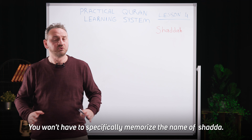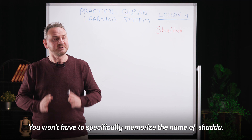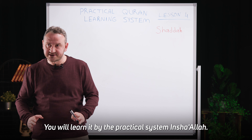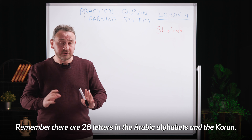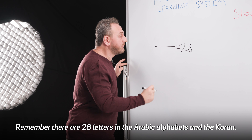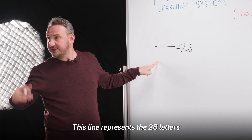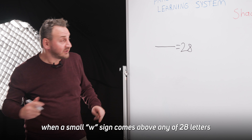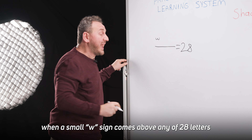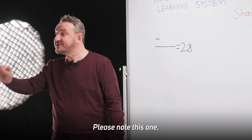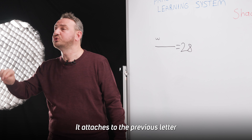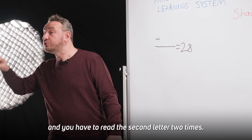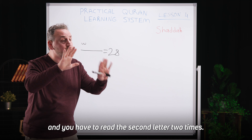What's Shaddah? Don't worry, you won't have to specifically memorize the name of Shaddah — you will learn it by the practical system, insha'Allah. Remember, there are 28 letters in the Arabic alphabet and the Qur'an. This line represents the 28 letters. When a small W sign comes above any of the 28 letters, please note this: it attaches to the previous letter and you have to read the second letter two times.